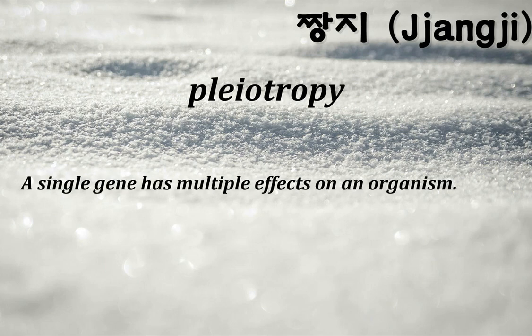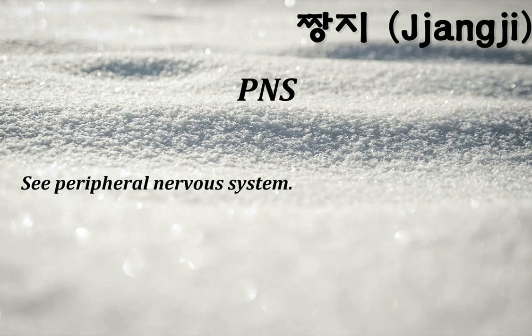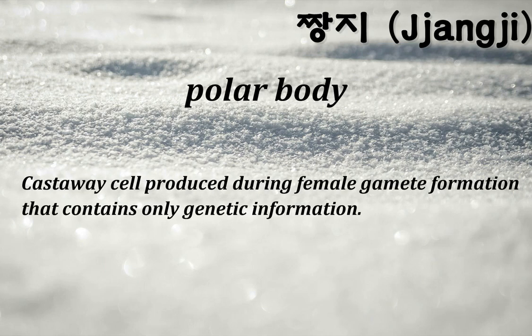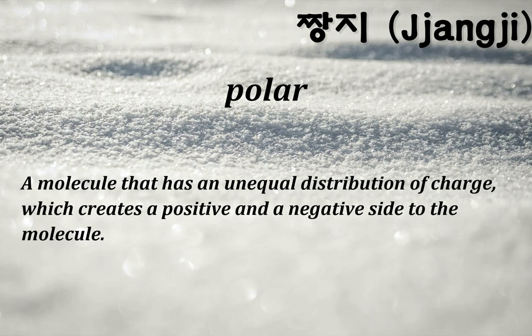Pleiotropy: a single gene has multiple effects on an organism. PNS: peripheral nervous system. Polar body: a cast-away cell produced during female gamete formation that contains only genetic information. Polar: a molecule that has an unequal distribution of charge, which creates a positive and a negative side to the molecule.